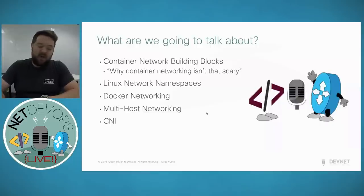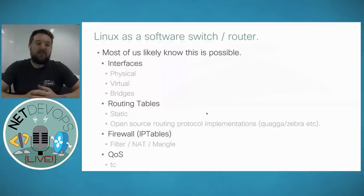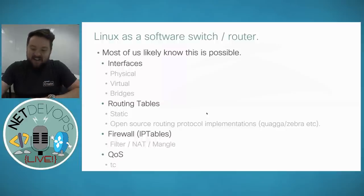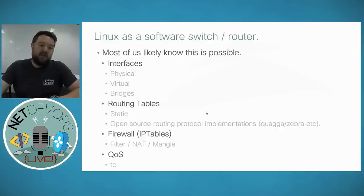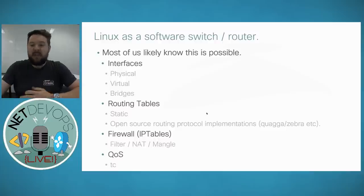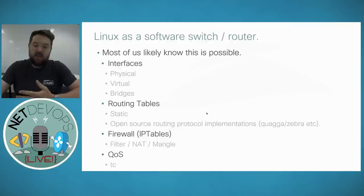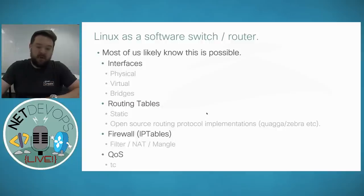It's very common building blocks that, once you understand the process, pretty much all the extra layers appearing in the container ecosystem are actually very simple additions — just like what you might see on your traditional enterprise or data center networks. Many of you will be familiar with the fact that Linux can operate as a software switch or router, create layer 2 bridges, use ifconfig or ip commands, create layer 3 interfaces, view static routing tables, or run open source routing protocol implementations like Quagga or Zebra for OSPF, BGP, etc.